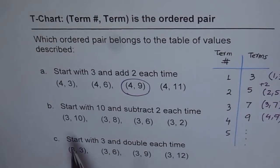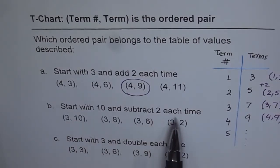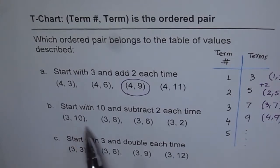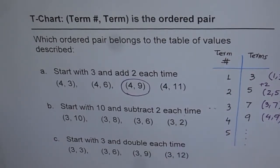Let's say start at 10 and subtract 2 each time. Choices are (3, 10), (3, 8), (3, 6), or (3, 2). So you have to find what is your third term for this rule.